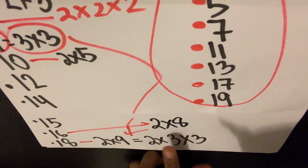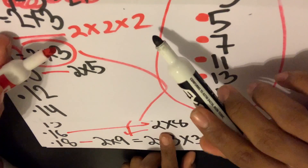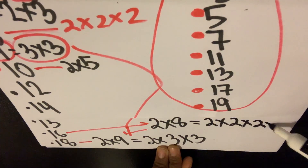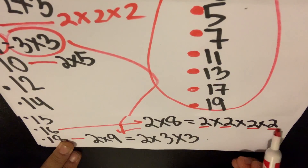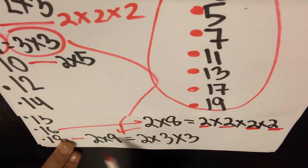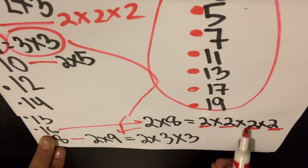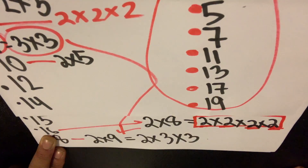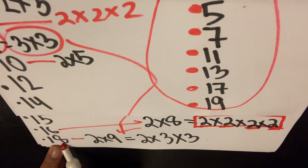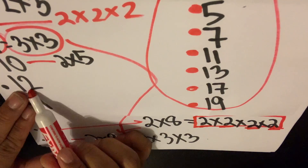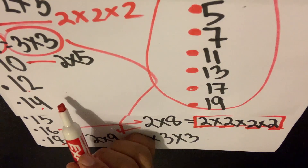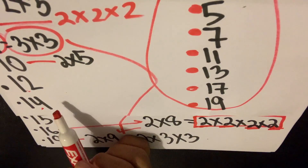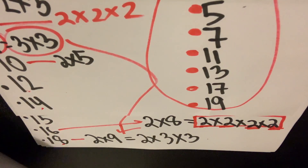And sixteen? Sixteen is two times eight, and eight is two times two times two, so sixteen is two times two times two times two — four twos. You notice all the pieces are prime. Sixteen, eighteen, twelve — any composite number is made of prime numbers.